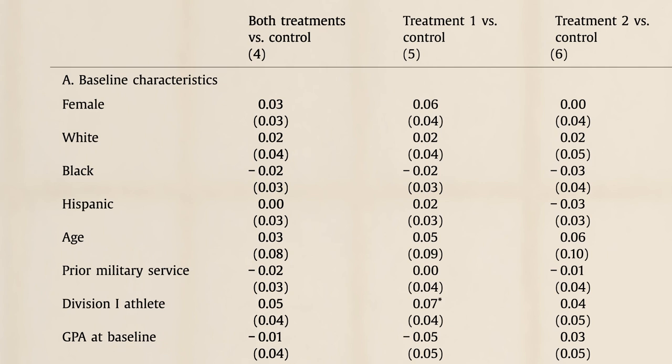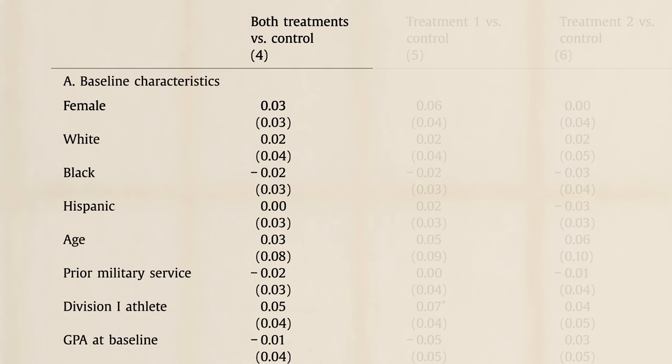Hmm. This takes us to the next feature of this table. Columns 4 through 6 use statistical tests to compare the characteristics of the treatment and control group before the experiment. In column 4, the two treatment groups are combined.